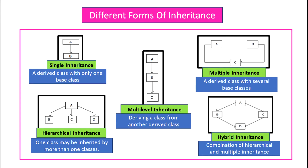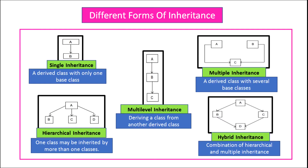Multi-level inheritance involves deriving a class from another derived class that is already derived from another base class. In this example, class A is the base class for class B, and class B in turn acts as a base class for class C, making C the child class.